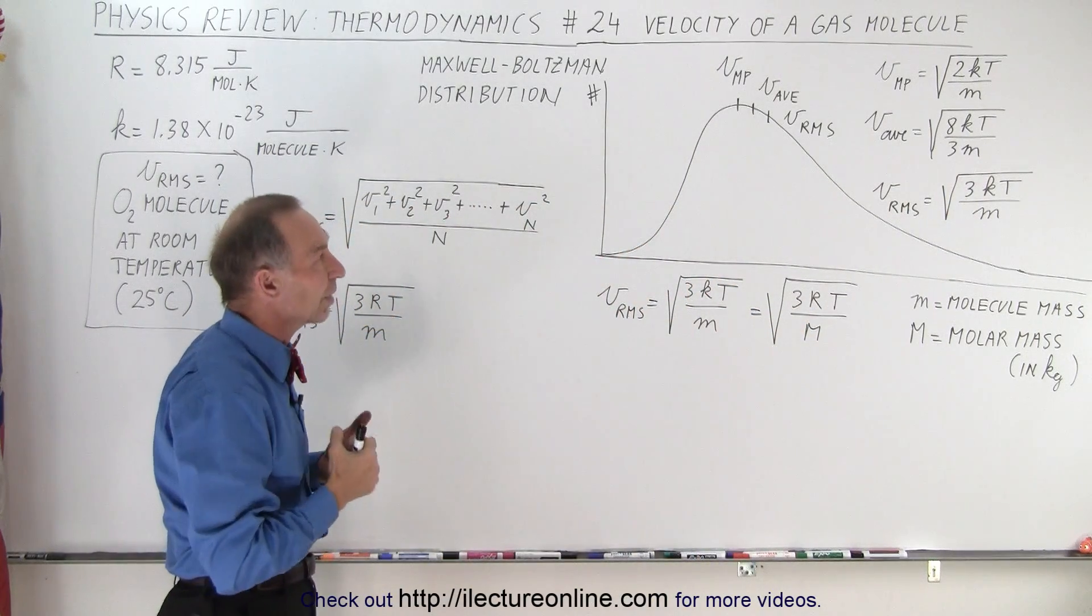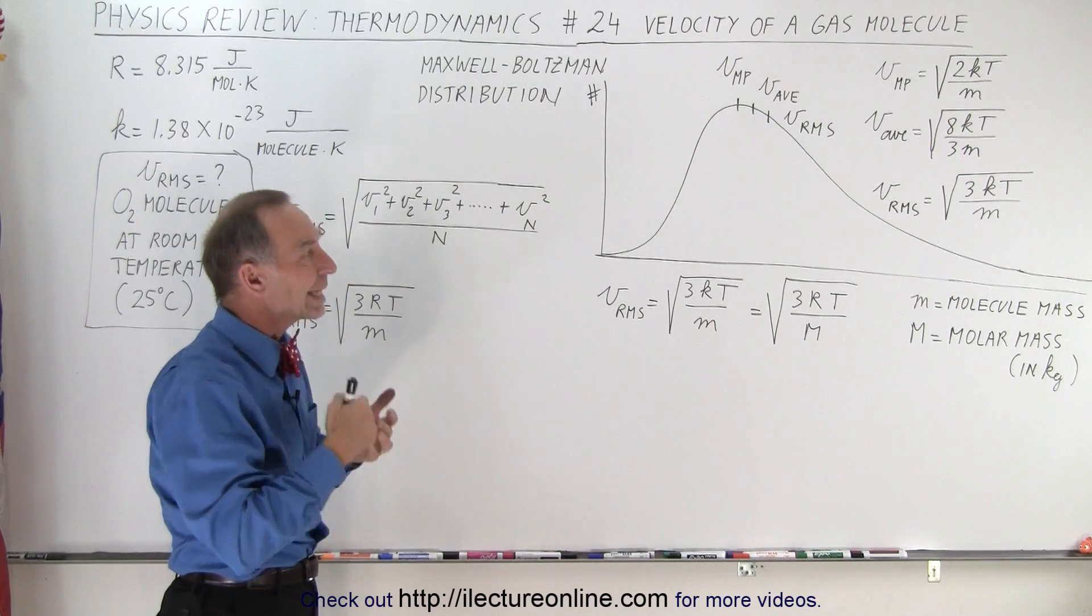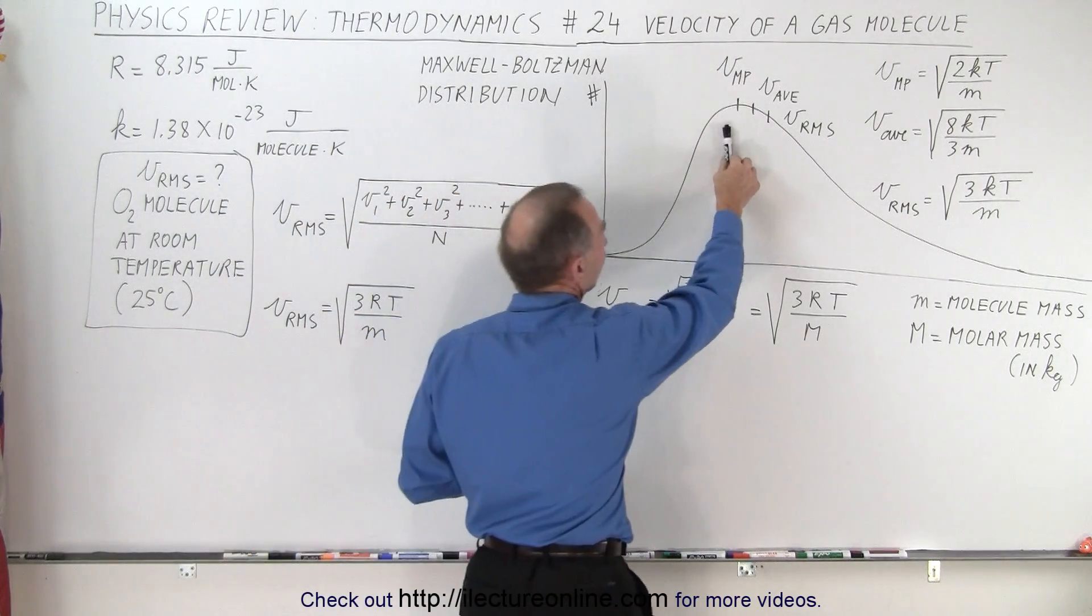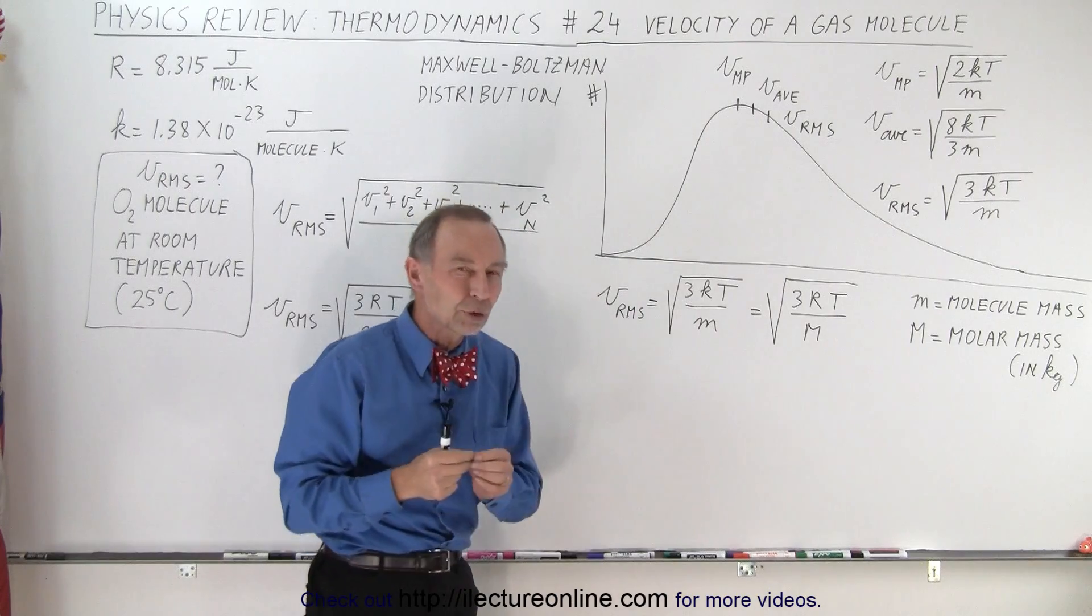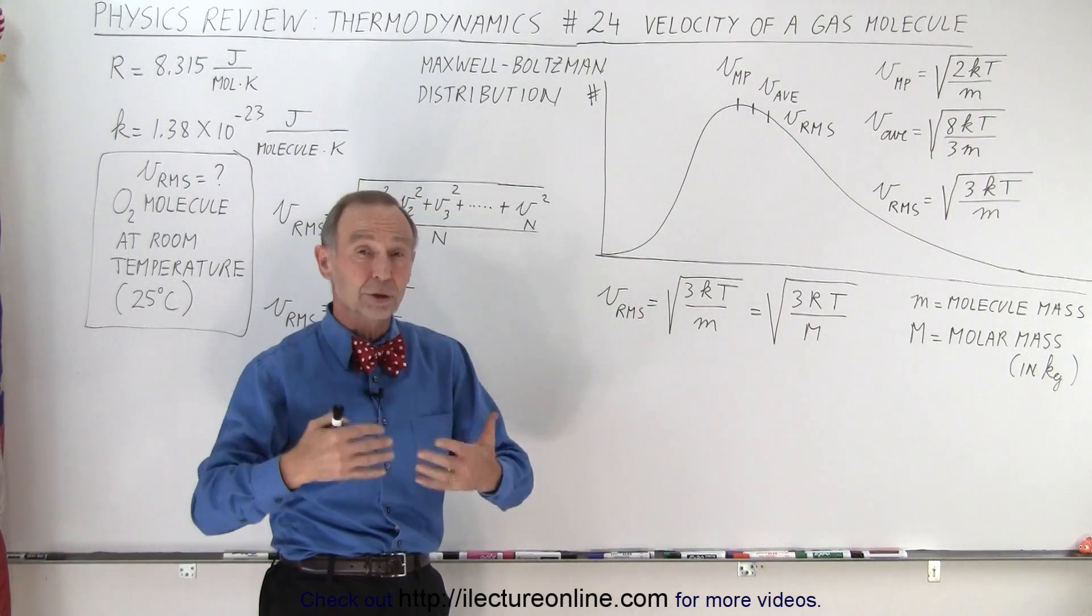And then finally, the root mean square velocity. That is the square root of 3kT over m, and that falls a little bit further to the right as well. But that is what we would call the effective velocity of the molecules in the air.